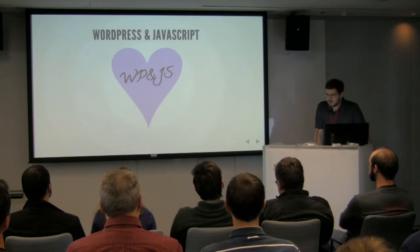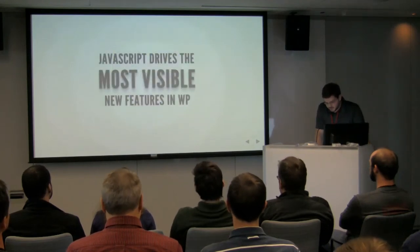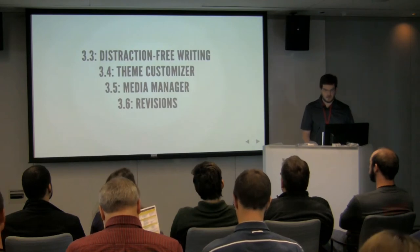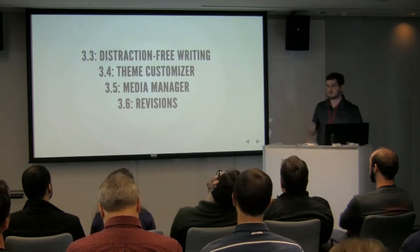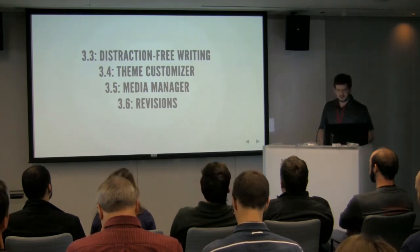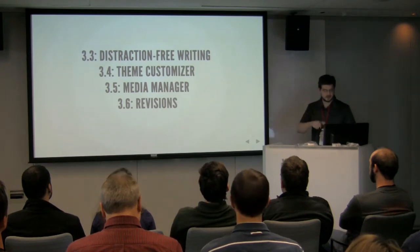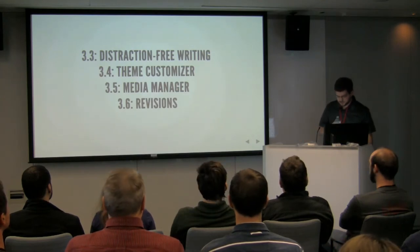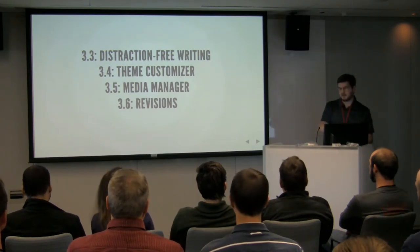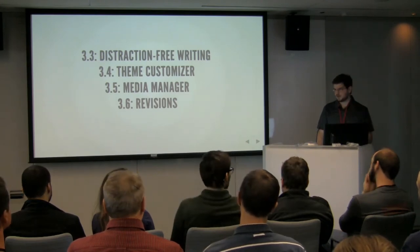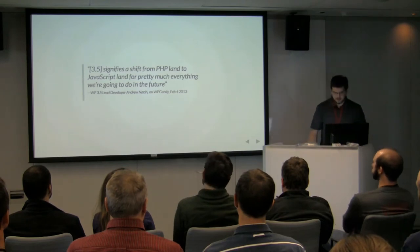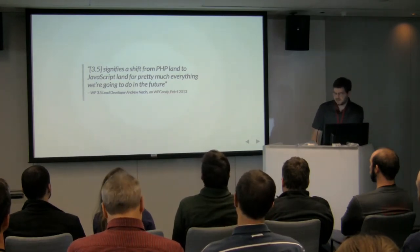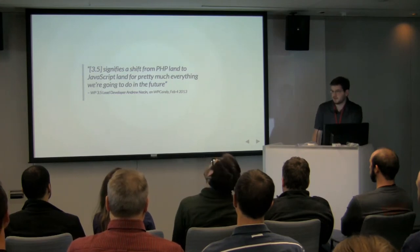We're talking about WordPress and JavaScript here, and historically that has meant primarily jQuery. But it's a really exciting time because as new versions of WordPress continue to be released, the most visible features in each of those successive releases end up being the JavaScript-driven features — the user admin-oriented features. Distraction free writing in 3.6, the theme customizer, media manager and revisions, and as of Thursday, the password strength indicators in WordPress 3.7, which was just released.